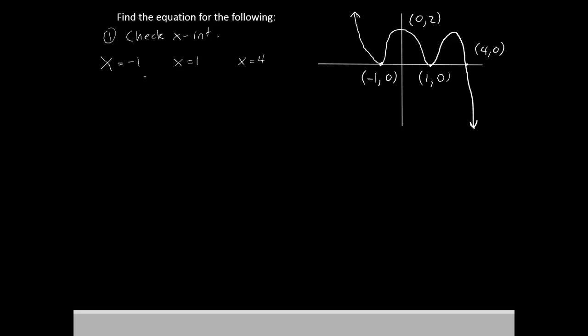Now what we're going to do is rearrange this equation here. Let's just add the 1 to the other side. So we'll have x plus 1 equals 0. Do the same thing over here, we'll subtract 1 to the other side. x minus 1 equals 0. And then subtract 4 to the other side. x minus 4 equals 0.